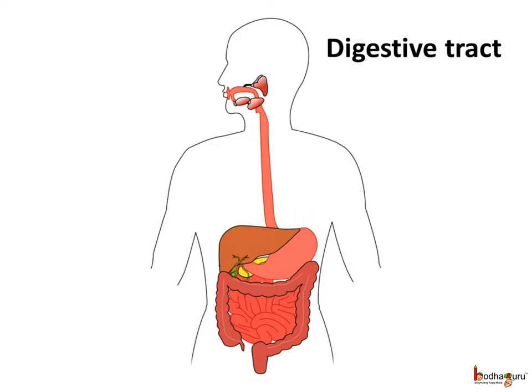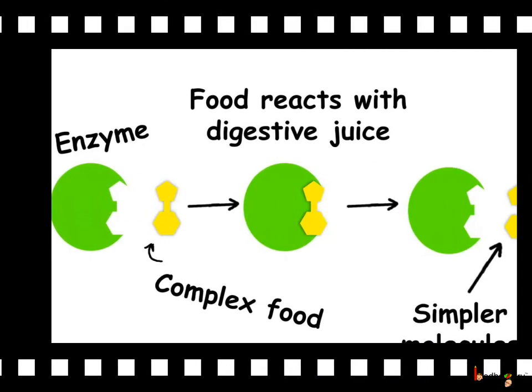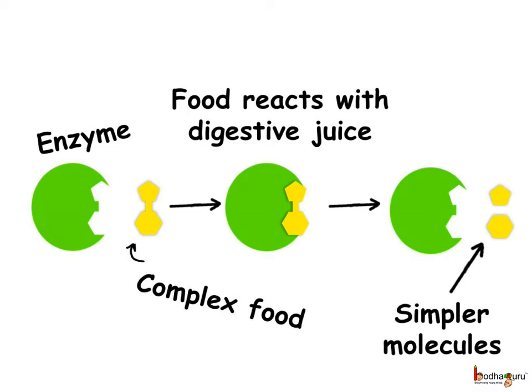The different organs of the digestive tract secrete, that is, release a liquid containing these chemicals, and we call that liquid the digestive juice, as they carry out the digestion by breaking down the foods. The digestive juice contains a type of chemical called enzyme, which breaks down the complex molecule into simple molecules.